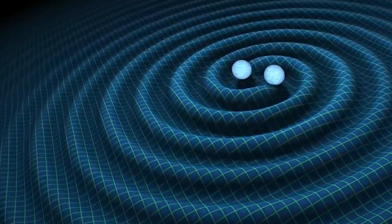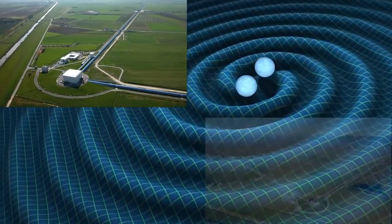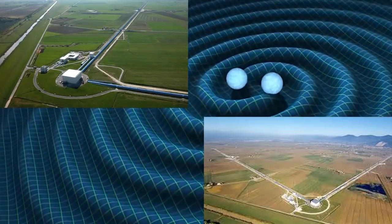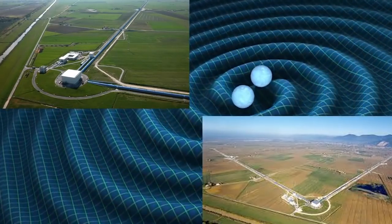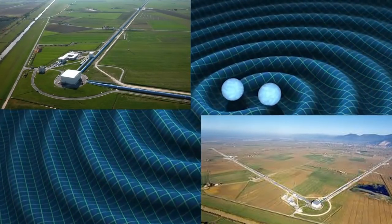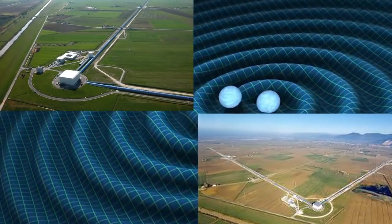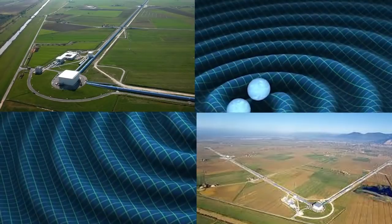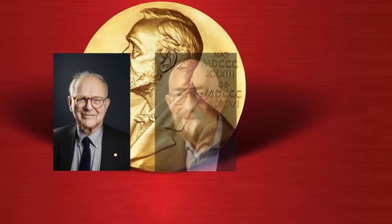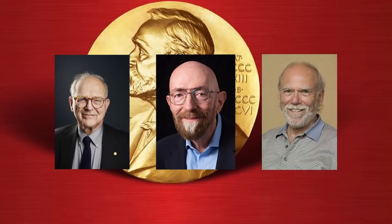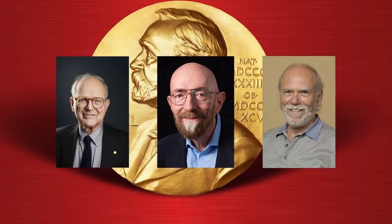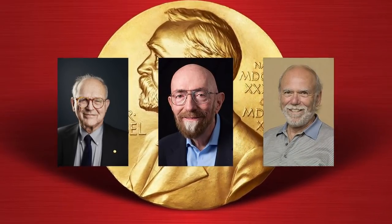On September 14, 2015, using the advanced LIGO detectors, the LIGO and Virgo scientific collaboration made the first direct observation of gravitational waves originating from a pair of merging black holes. The LIGO instruments have since detected several more confirmed gravitational wave events. In 2017, Rainer Weiss, Kip Thorne, and Barry Barish were awarded the Nobel Prize in Physics for their role in the direct detection of gravitational waves.